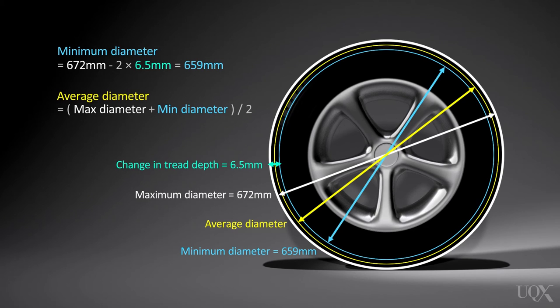Therefore, the average diameter is half the sum of 672 millimetres and 659 millimetres, which is 665.5 millimetres approximately.